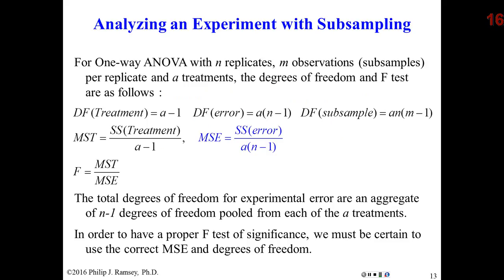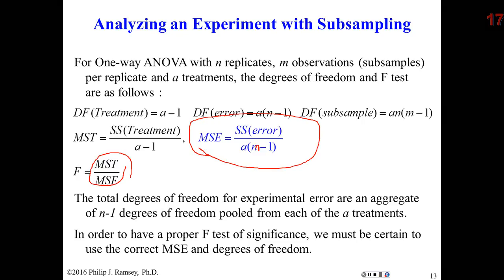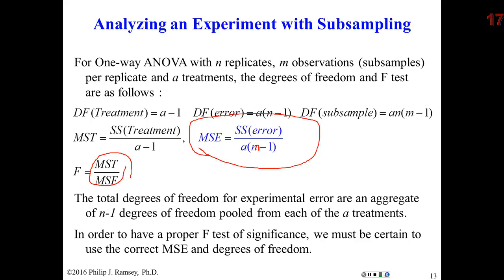I'm reiterating the basic formulas for the mean square between and the mean square error in the F ratio. When there is subsampling, we have to modify the mean square error formula. A is the number of levels of the experimental factor. The degrees of freedom use M minus one — the number of subsamples per unit. This is important: if we do not make this adjustment, we will not calculate the correct F ratio. Generally, statistical software packages do not know how to do the correct analysis unless you give them the appropriate information, and I'll show how to do this in JMP.